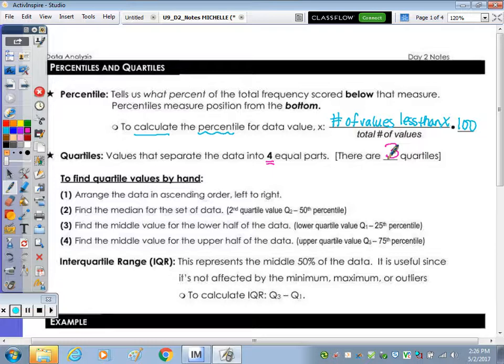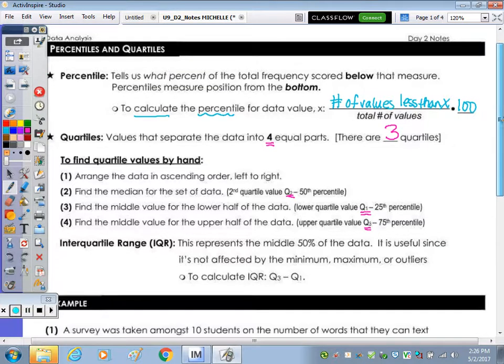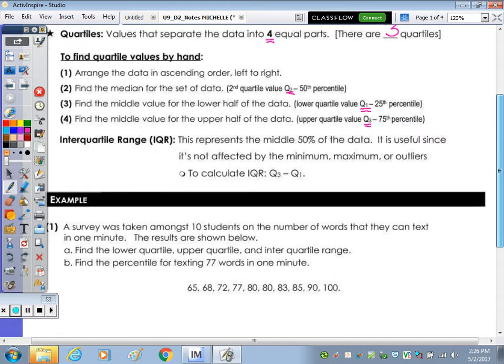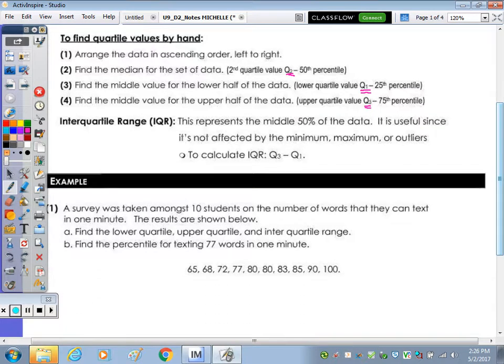And you saw this on your calculator. We've got quartile one. Quartile one is the 25th percentile. Quartile two is the 50th, and three is the 75th percentile. So if you want to calculate the quartiles, let's actually follow these steps below for example number one. It says first arrange the data in ascending order left to right. If we look at this data here, is it already in order? Yeah.